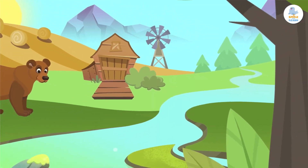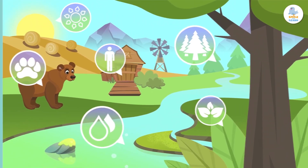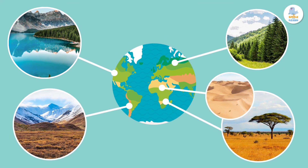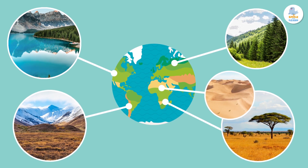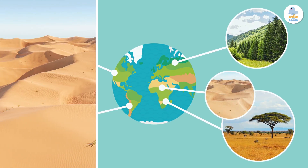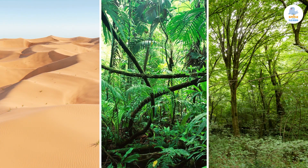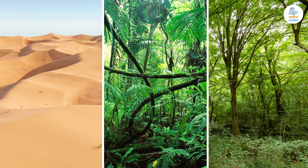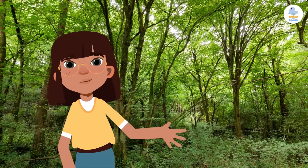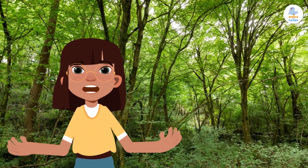Let's remember that an ecosystem is a community of living beings and the physical characteristics of the environment where they live. On planet Earth there are many types of ecosystems, both aquatic and terrestrial. Today we will focus on the latter — those that take place on land, such as deserts, jungles, or forests.